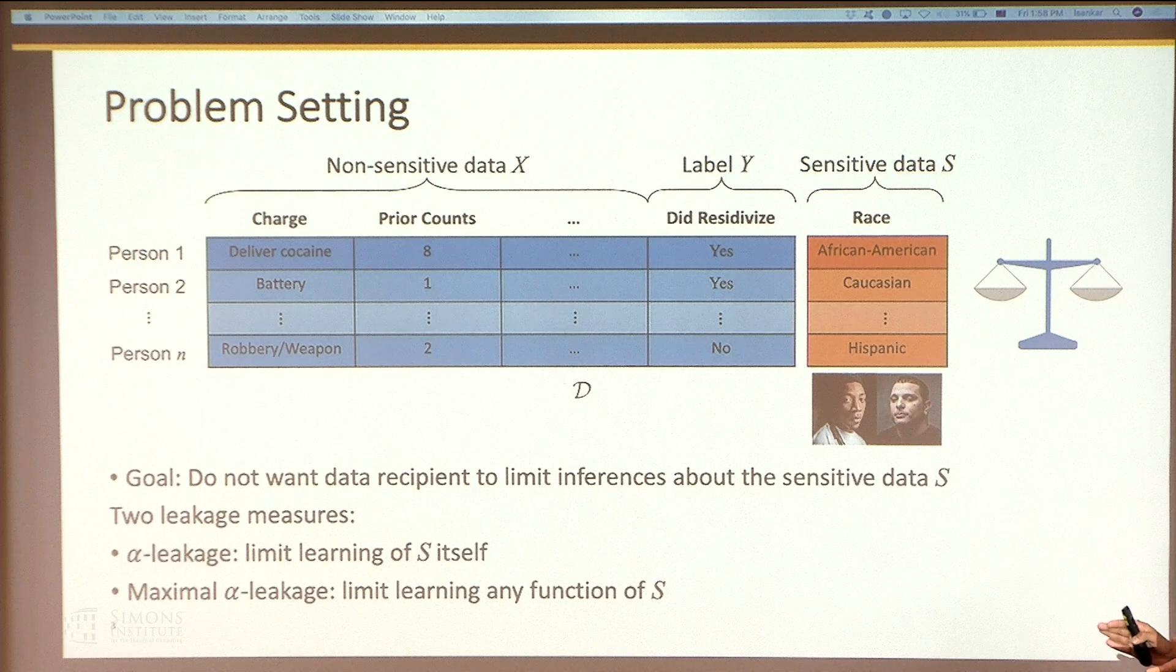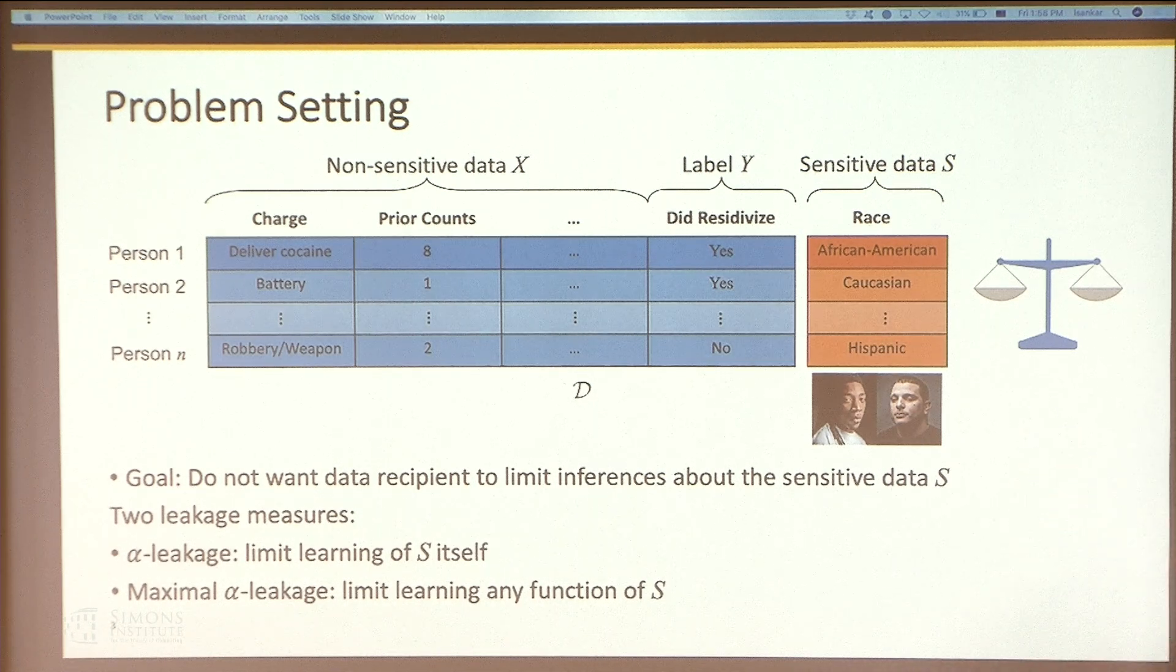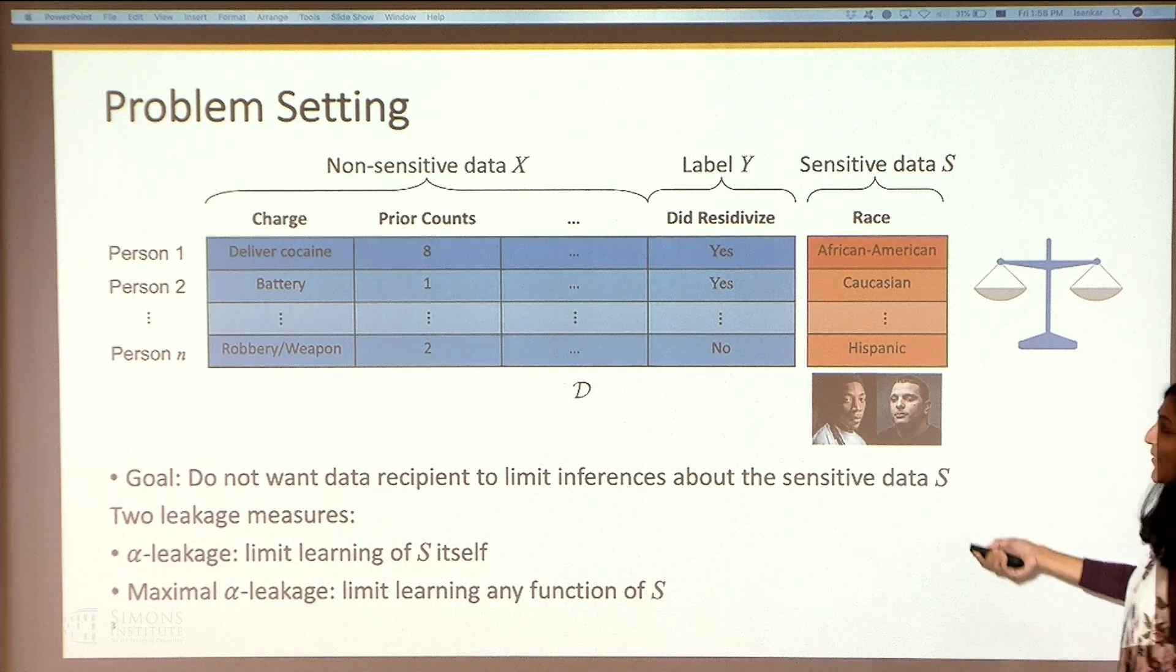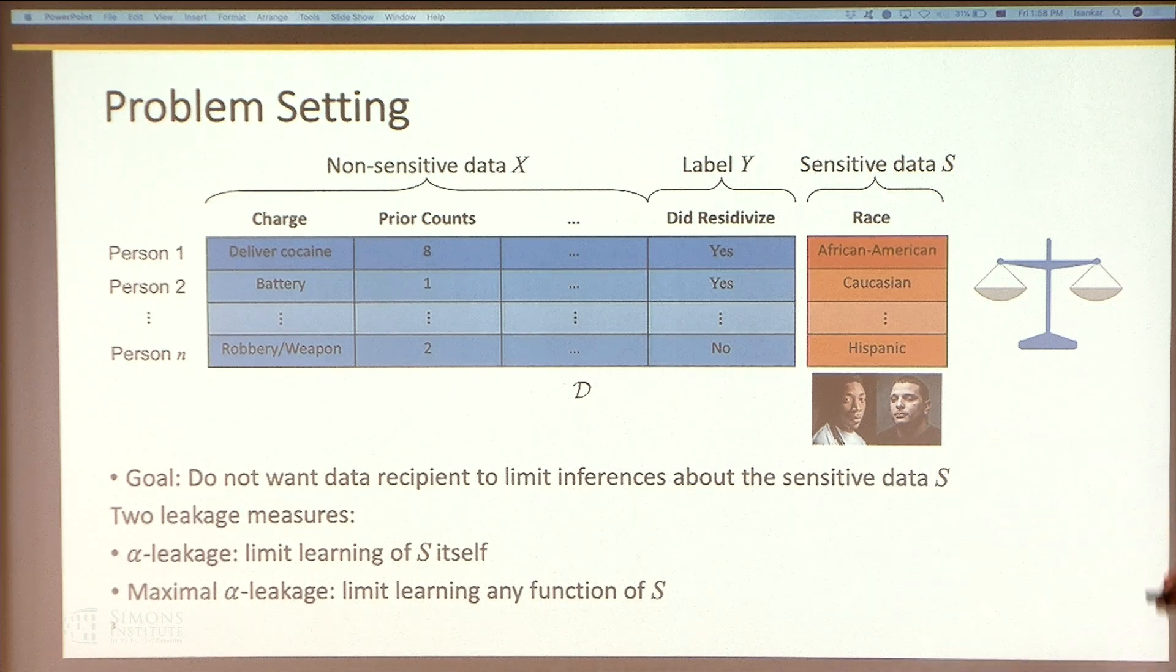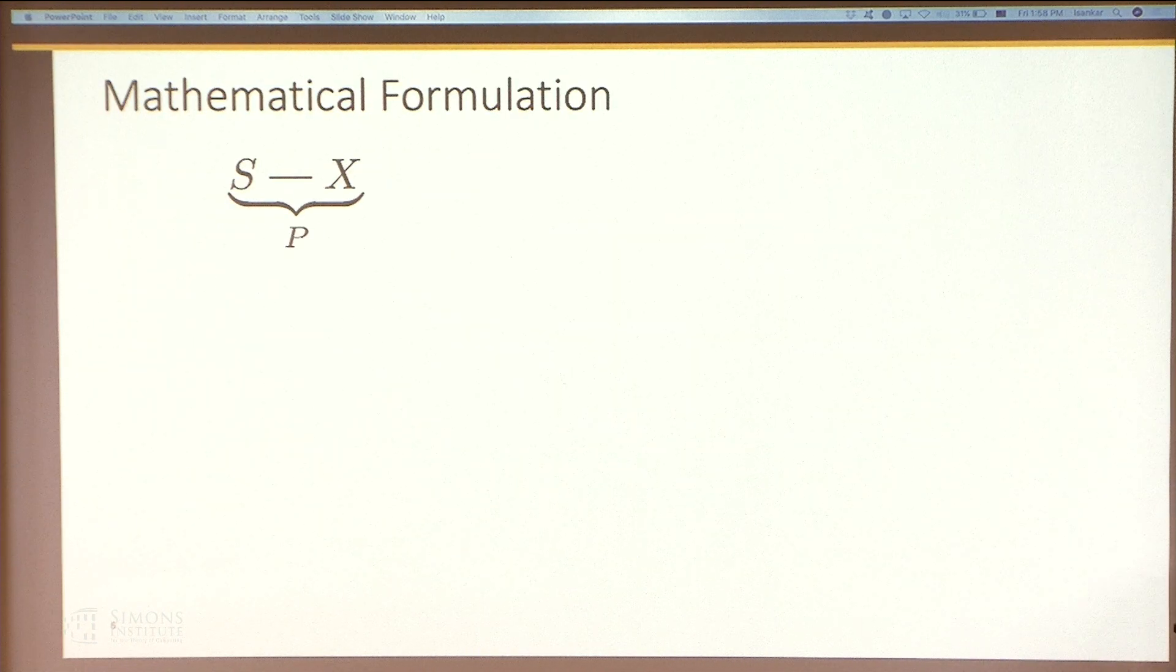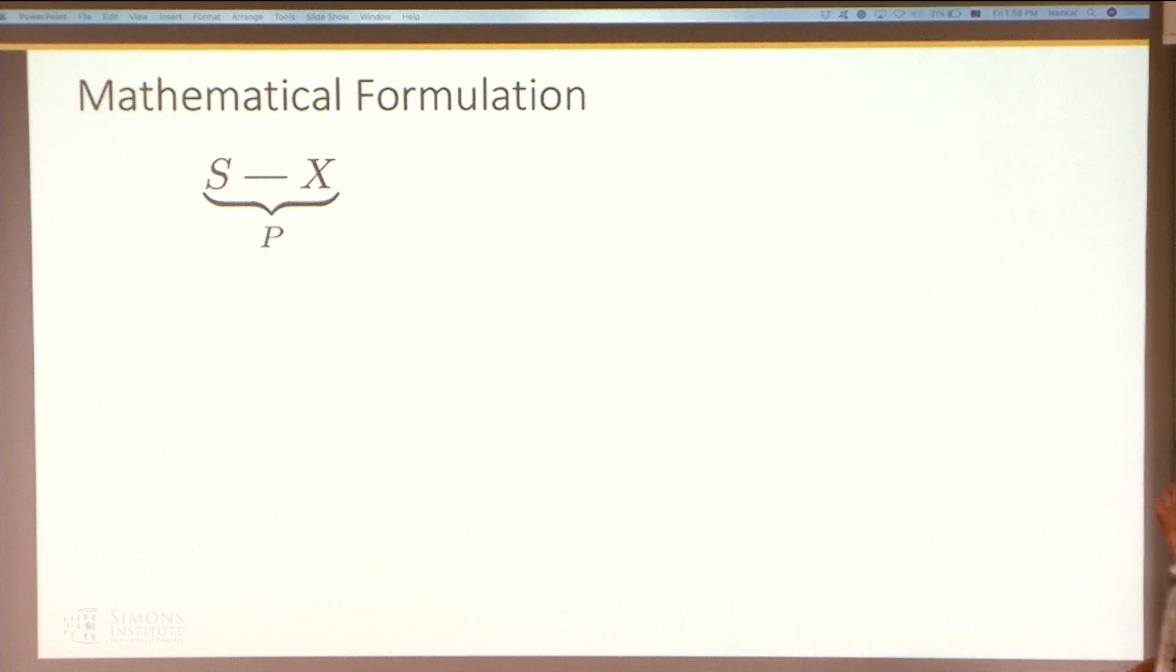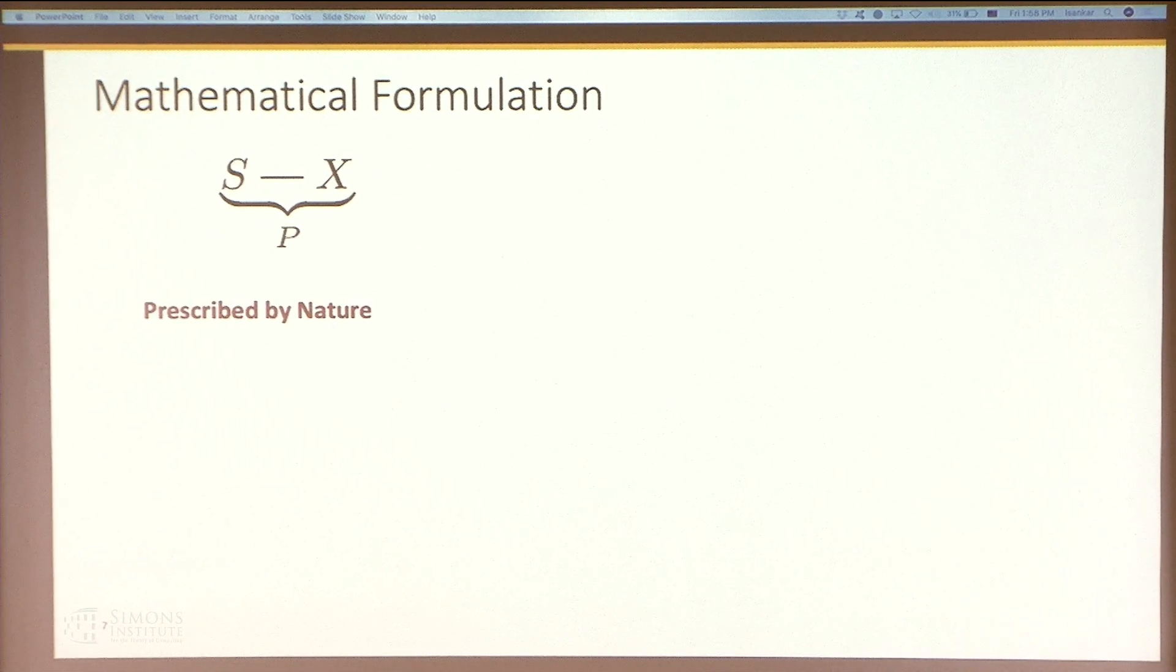So just to get you a sense of what the problem setting is, we're going to look at a data set where you have a very clear idea of what the sensitive data is, and the rest of the data needs to be published. You get this data, you get N samples, and you're going to figure out how to design a mechanism. So guarantees from finite samples. Here's our formulation. Today it's X, yesterday it was S, yesterday it was U. So S is our sensitive variable, and there's X which is correlated with S, and nature determines this joint distribution.